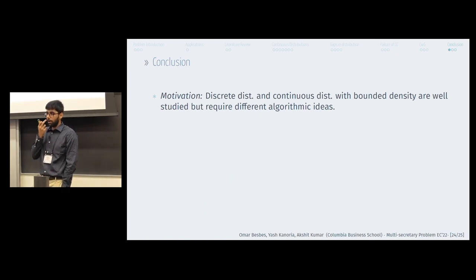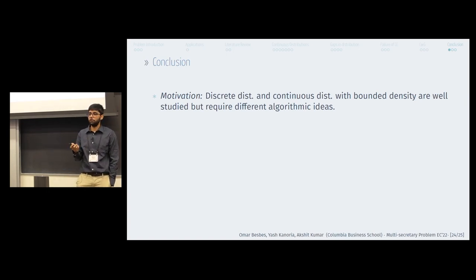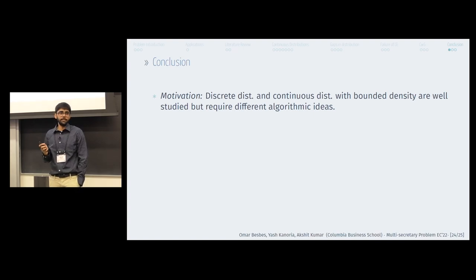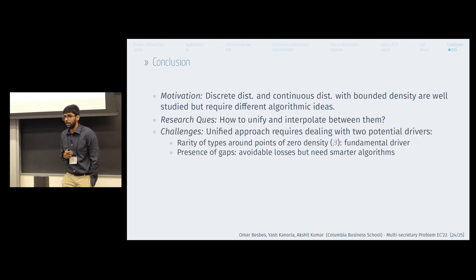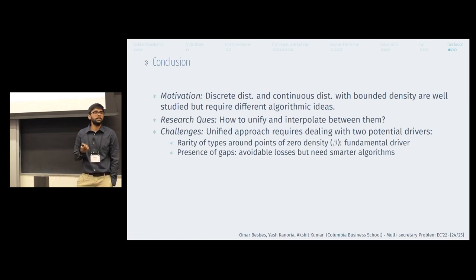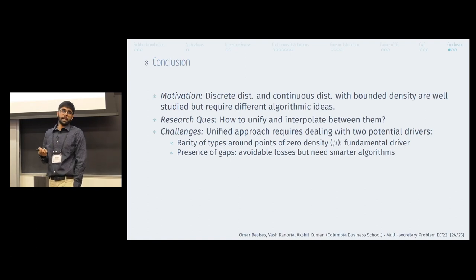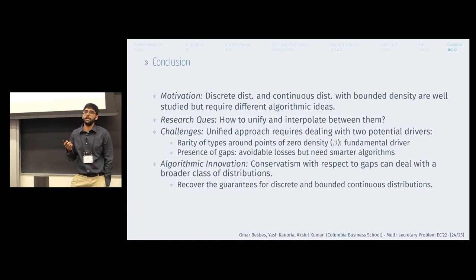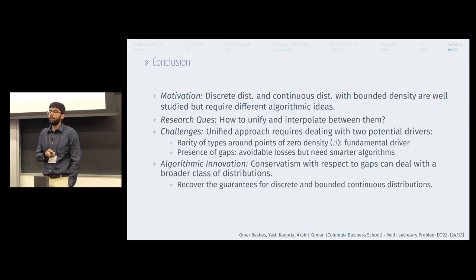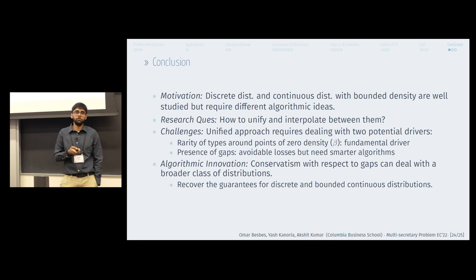In conclusion, we started with the observation that discrete distributions and continuous distributions with bounded densities were well studied but required different algorithmic ideas. Our research question was how to unify and interpolate between these two classes smoothly. We identified two challenges: rarity of types, characterized by parameter beta, which is a fundamental driver of regret with no getting around it; and the presence of gaps, which lead to avoidable losses but still require smarter algorithm design. This led to our algorithmic innovation — conservatism with respect to gaps — which handles a broader class of distributions including beta-epsilon-naught, recovering guarantees for both discrete distributions and bounded continuous distributions as corollaries.